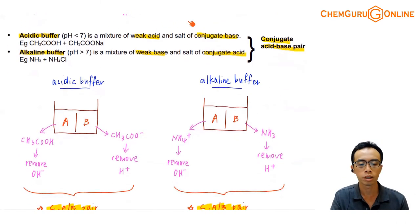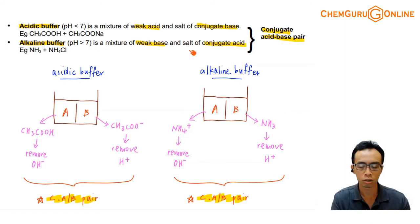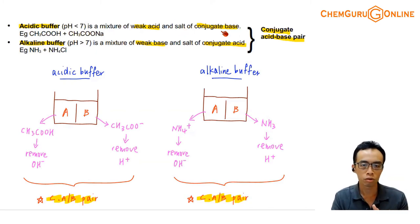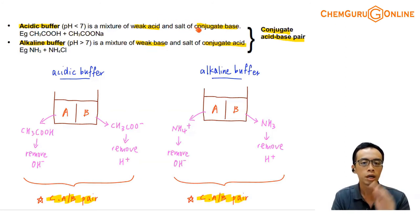Typically when we consider buffers, we say there are two types: acid buffer and alkaline buffer. An acid buffer is a mixture of a weak acid and its conjugate base. We often say it's the salt of the conjugate base, but please don't emphasize the salt — focus on the conjugate base, which is more important. Don't get distracted by the salt. If I have a weak acid and conjugate base, this is an acidic buffer.